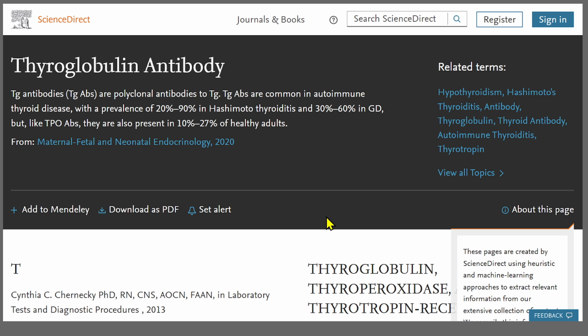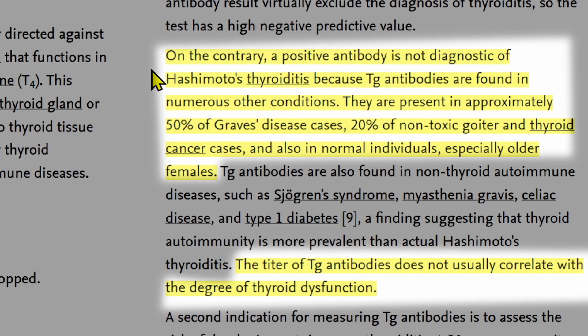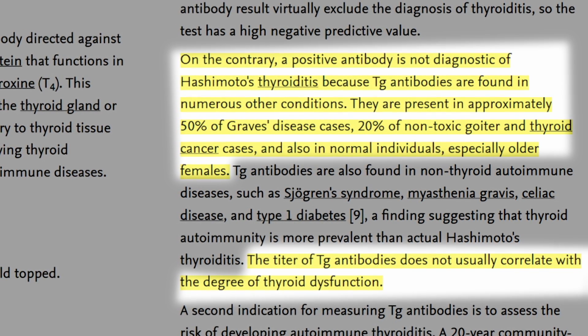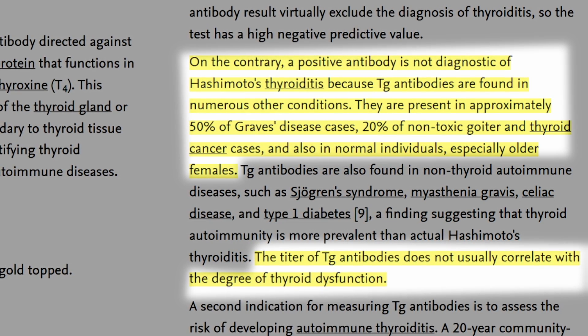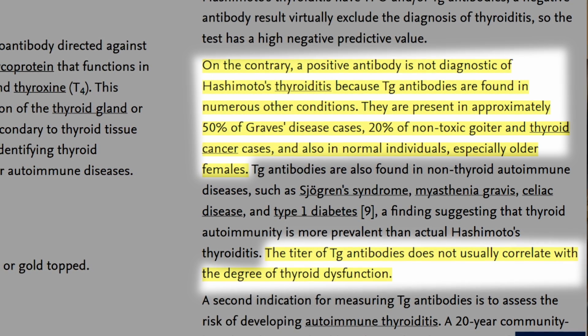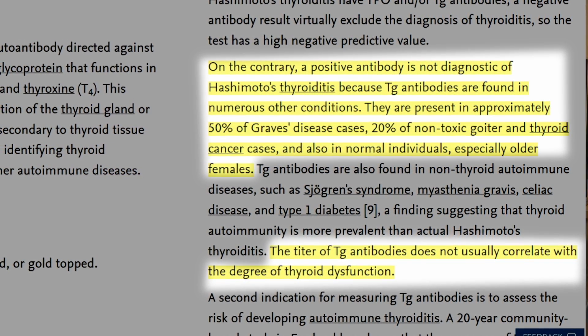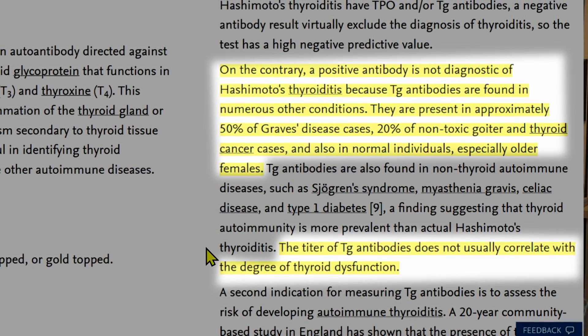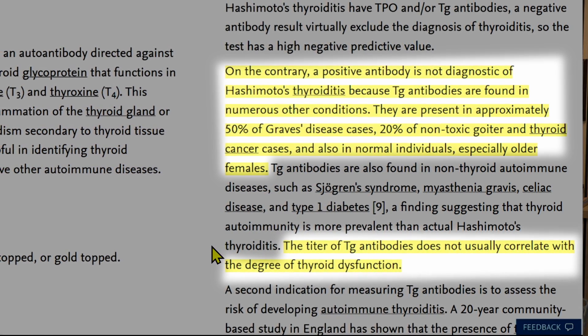Here's the first evidence point: "On the contrary, a positive antibody for thyroglobulin is not diagnostic of Hashimoto's because thyroglobulin antibodies are found in numerous other conditions. They are present in approximately 50% of Graves' disease, 20% of non-toxic goiter and thyroid cancer cases, and also in normal individuals, especially older females. The titer of thyroglobulin antibodies does not usually correlate with the degree of thyroid dysfunction." This is why we want to use this marker as part of a larger diagnostic approach, not come to a firm diagnostic conclusion for thyroid autoimmunity based upon thyroglobulin alone.